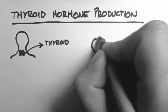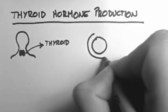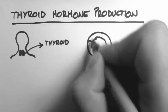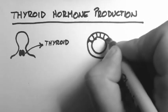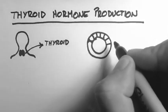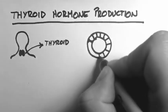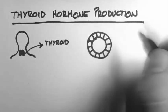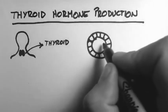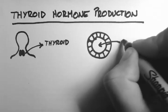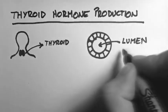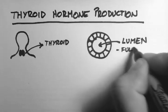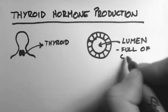Now in the thyroid gland, there are these little apparatuses which consist of a ring of cells surrounding a ball of fluid. This fluid is in the lumen and we call it colloid.